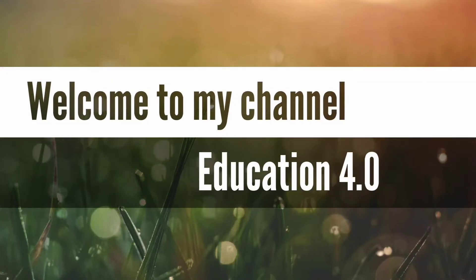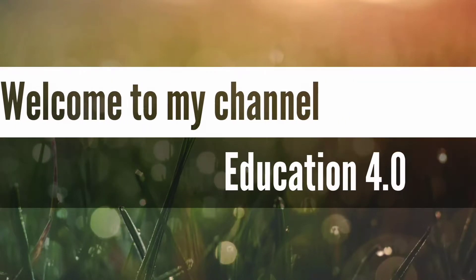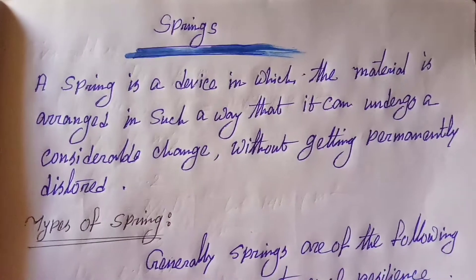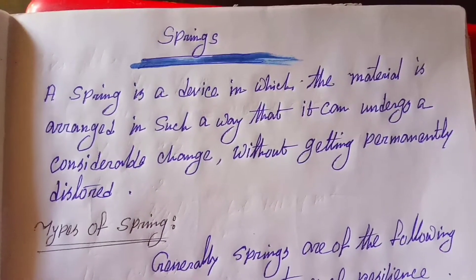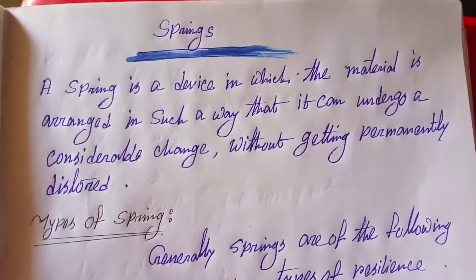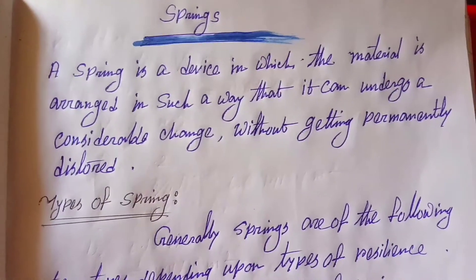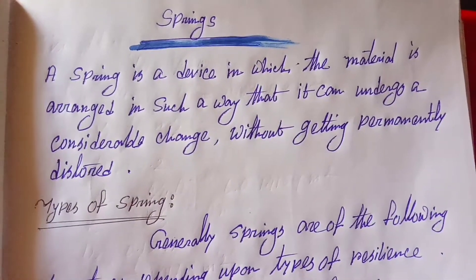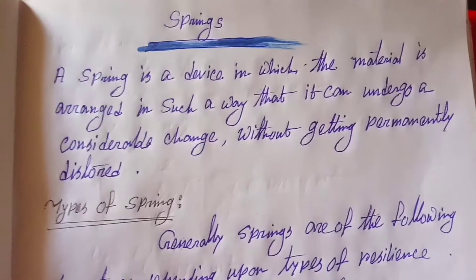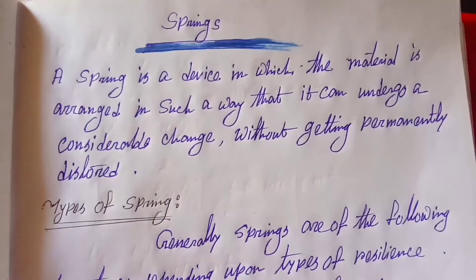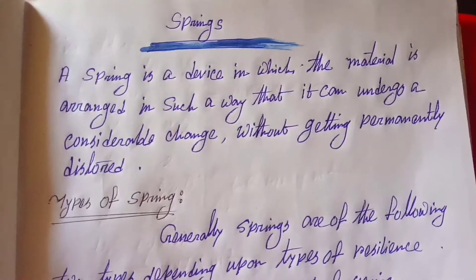Hello friends, welcome to my channel Education 4.0. Today's topic is springs. So what is a spring? A spring is a device in which a material is arranged in such a way that it can undergo a considerable change without getting permanently distorted. Now we will discuss the types of springs.